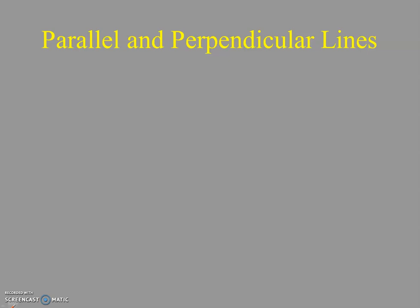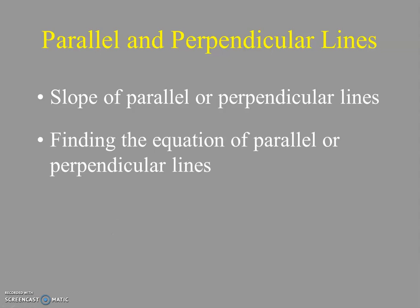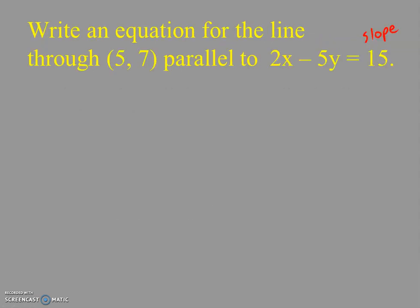Today we need to be talking about parallel and perpendicular lines, and that means we're going to investigate some slopes and the equations of those lines, both vertical and horizontal. We're going to start off with an equation like this: 2x minus 5y equals 15, and we're trying to find the equation of a line that's parallel and passing through (5, 7).